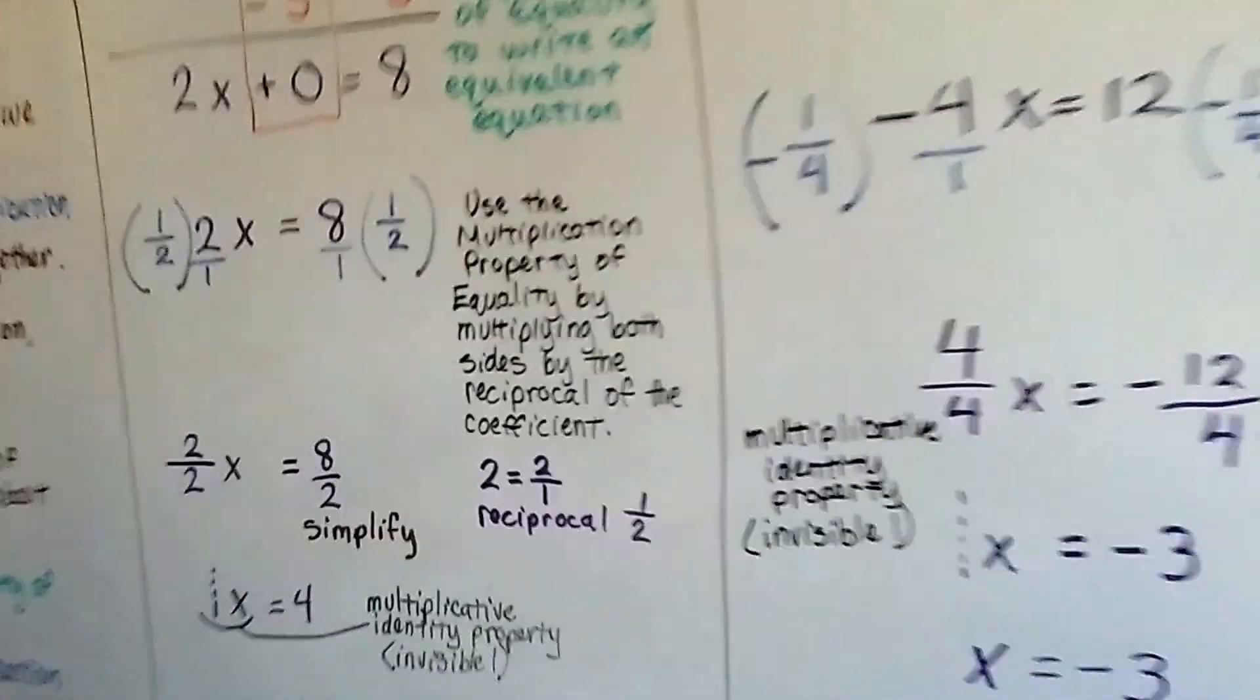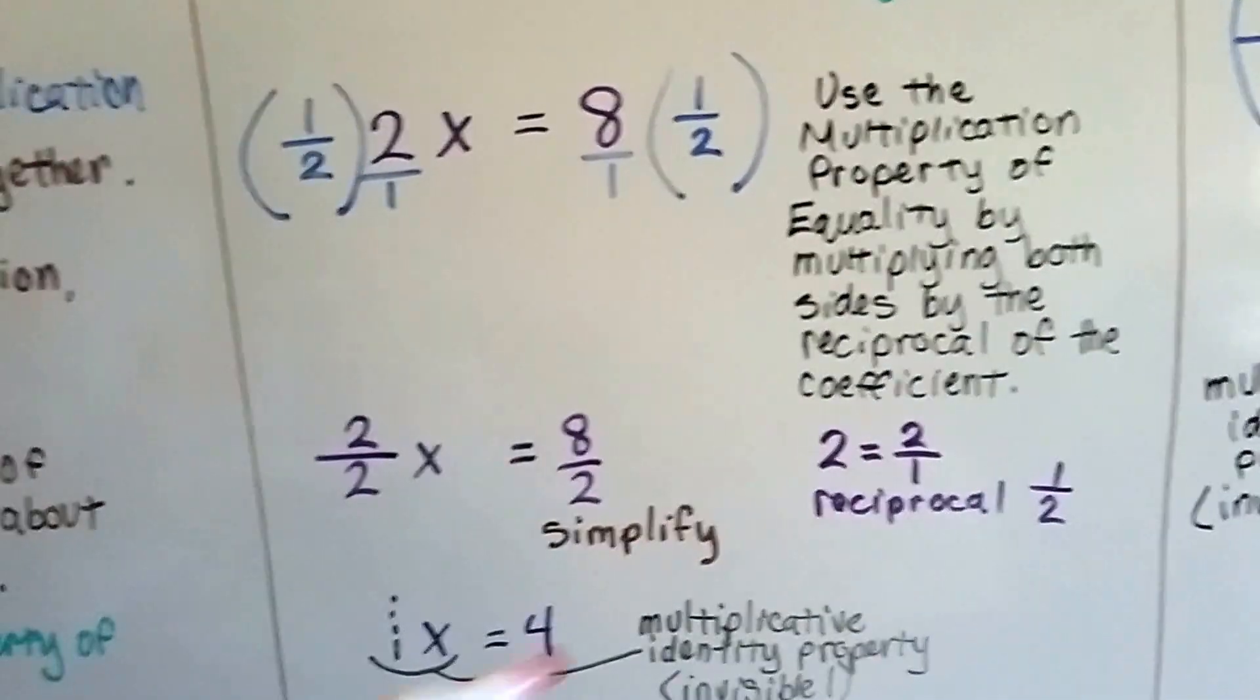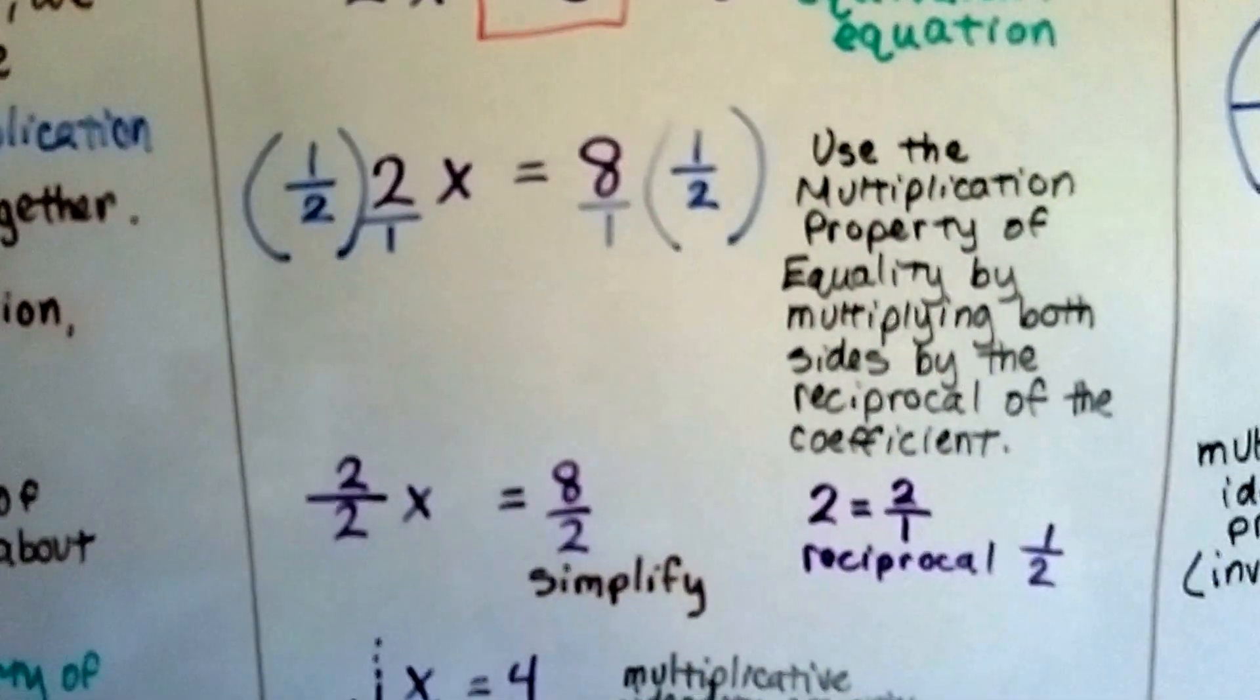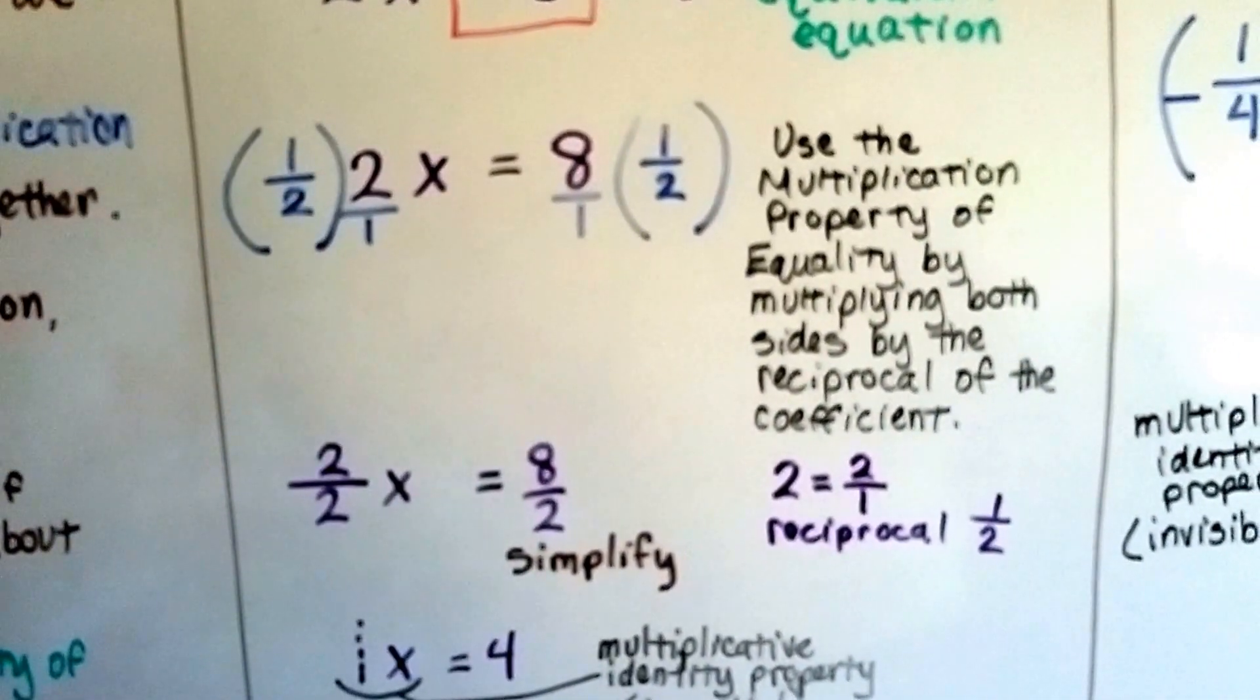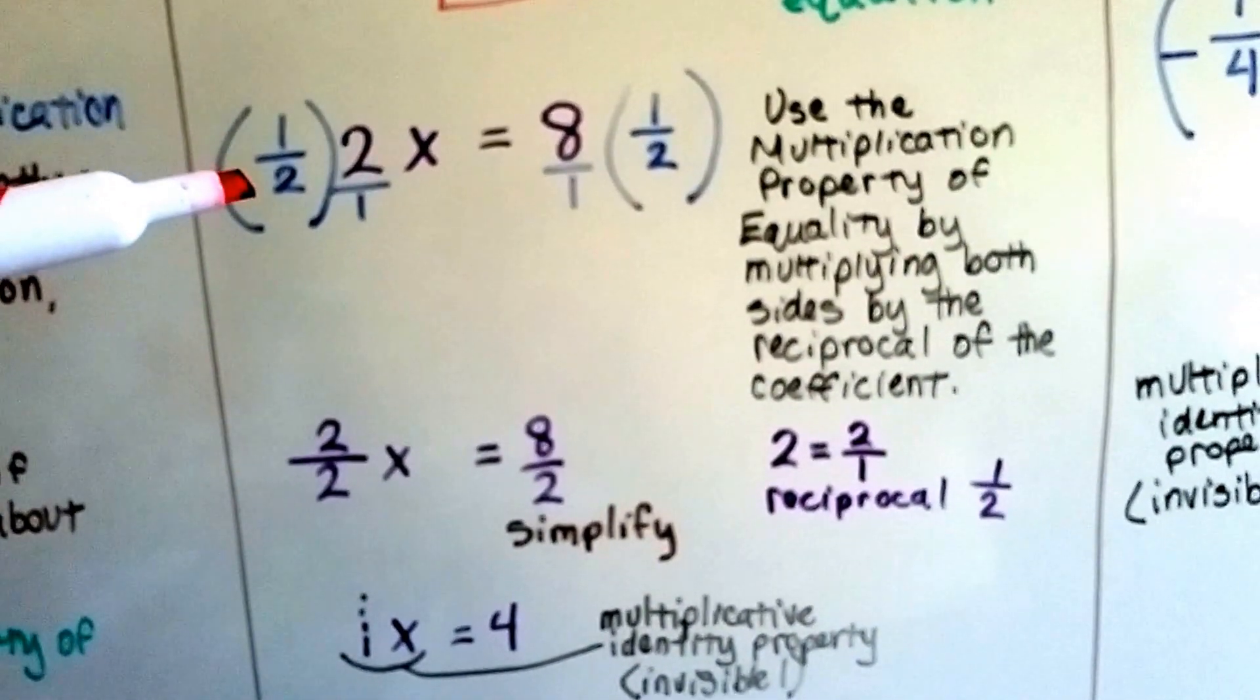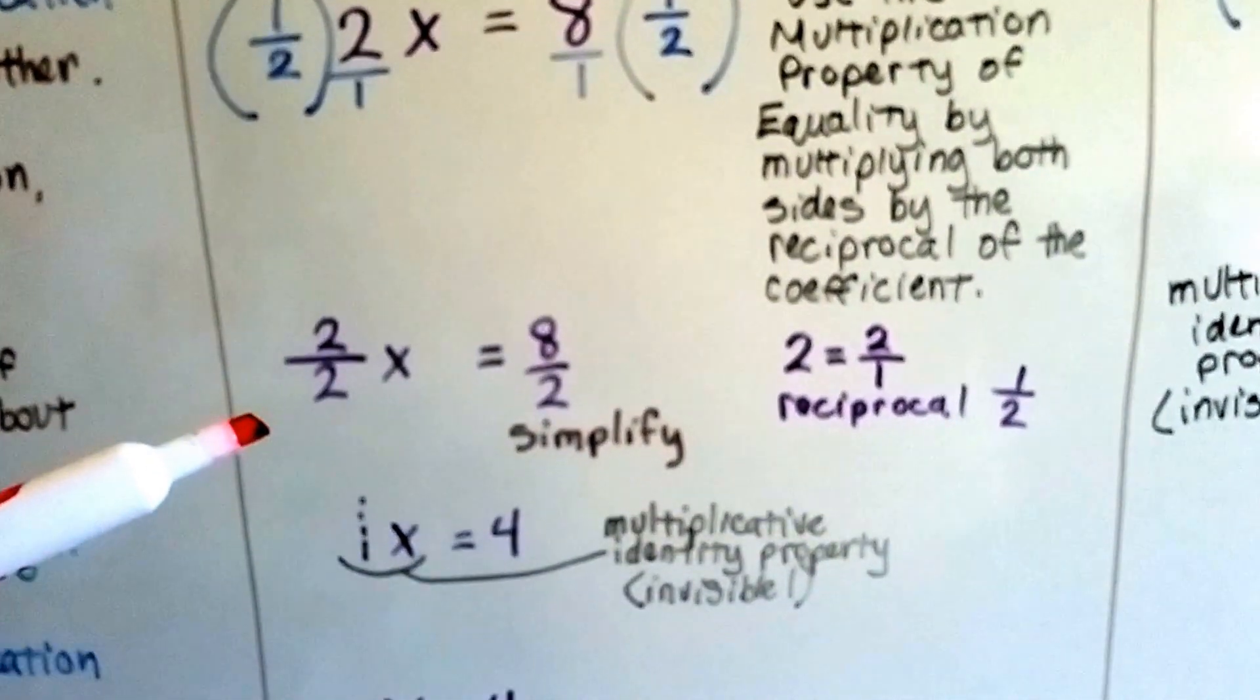So we need to multiply both sides by the reciprocal of this coefficient, this 2. And it's 1 half. So we're going to multiply both sides of the equal sign by half. And when we do, we can put a little 1 underneath our whole numbers, so that we can multiply straight across easier. We get 1 times 2 is 2 over 2 times 1 is 2. And then, on this side of the equal sign, we get 8 over 2.